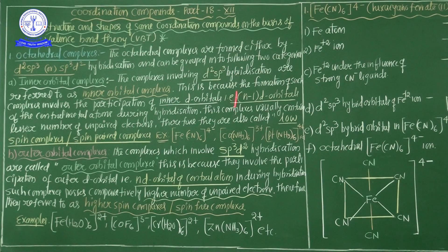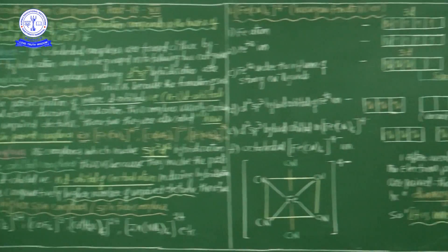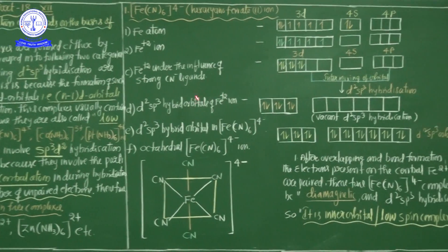Summary: d²sp³ hybridization gives inner orbital complexes using (n-1)D orbitals — these are low spin and spin-paired. sp³d² hybridization gives outer orbital complexes using nD orbitals — these are high spin and spin-free. These are the two basic types for octahedral complex formation based on VBT theory.